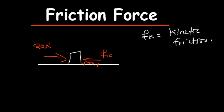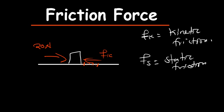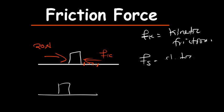Another type of friction that you need to understand is what we call static friction. Static friction is the friction that is present when an object is not moving. For example, if this object is not moving and friction is present, that friction is what we call static friction — from the word static, meaning the object is not moving. Kinetic means something is in motion.